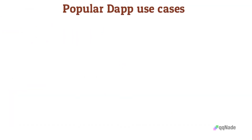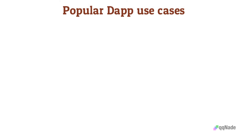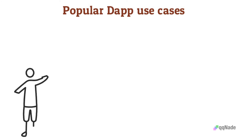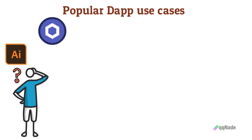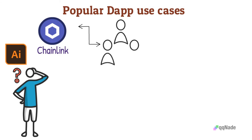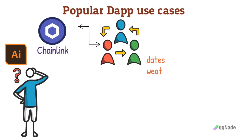So what are some popular dApps that exist today? First, we'll be looking at Chainlink. Chainlink is a decentralized app that provides Oracle network services to blockchains. Oracles are software that allow blockchains to connect with other non-blockchain systems. Thanks to Chainlink, smart contracts that need specific inputs like dates, weather, etc. can get access to that information.